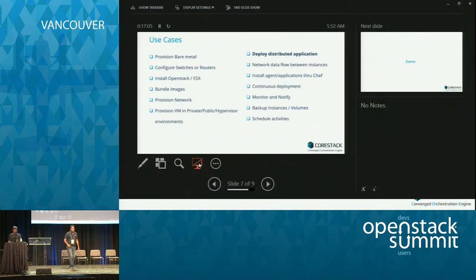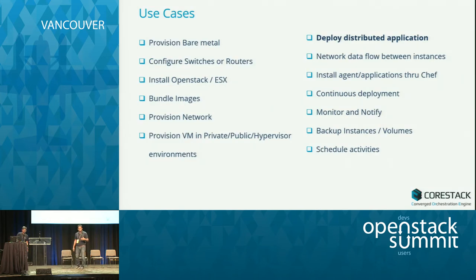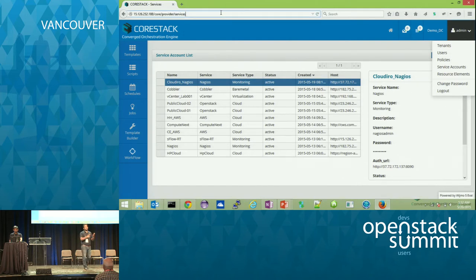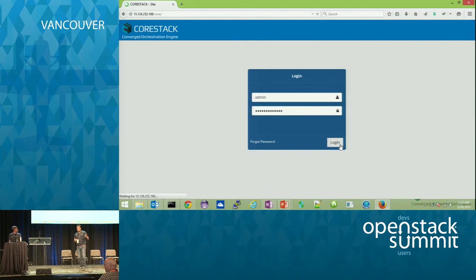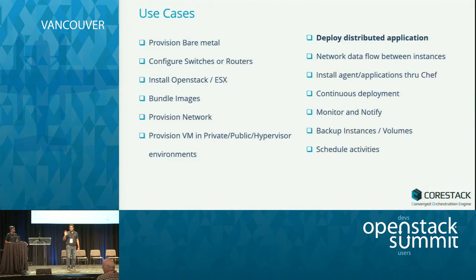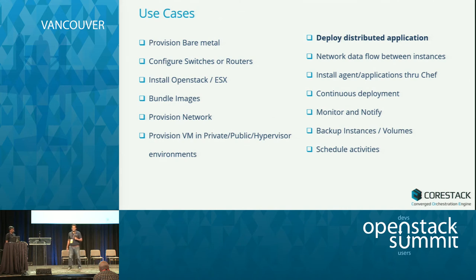The use case I'll walk through today is the deployment of a distributed application. For a two-tier application, you need an app server and a DB server. You want to provision two instances, install an application, configure it, and if you want to monitor those applications, you can insert that script into one template. With one click, you're able to deploy the application. Use cases are not just limited to deploying distributed applications — you can provision bare metal, configure devices like switches and routers, or install OpenStack itself with a single template. Let me get onto the product itself and show you how it's done.